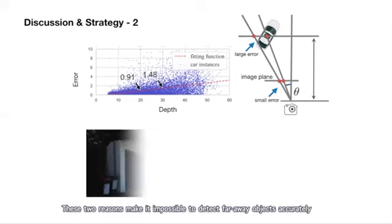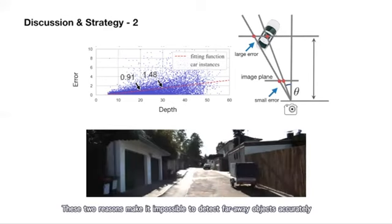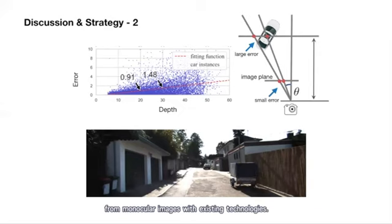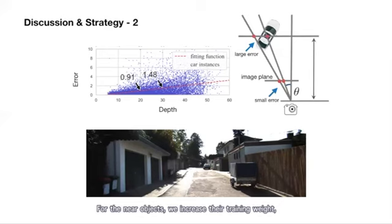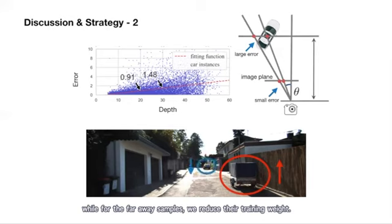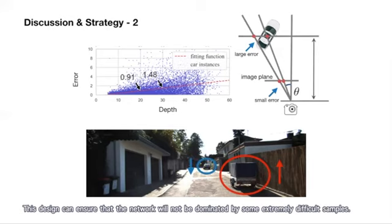These two reasons make it difficult to detect the faraway objects accurately from the monocular images with the existing technologies. For this reason, we dynamically adjust the training weight for each sample. For the near objects, we increase the training weight, while for the faraway objects, we reduce the training weight. This design can ensure that the network will not be dominated by the extremely difficult samples.